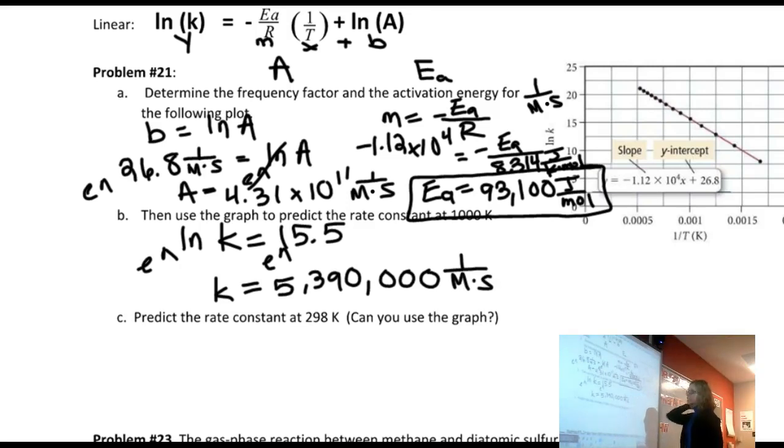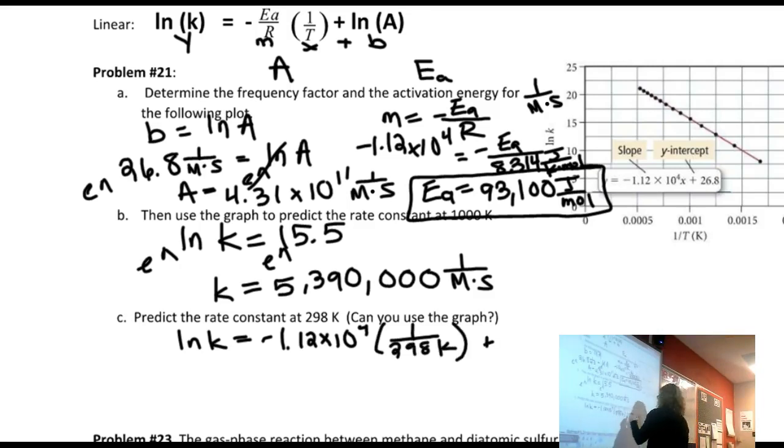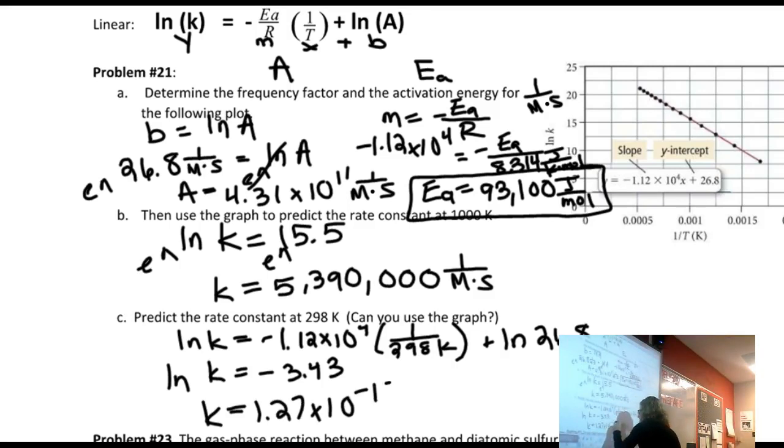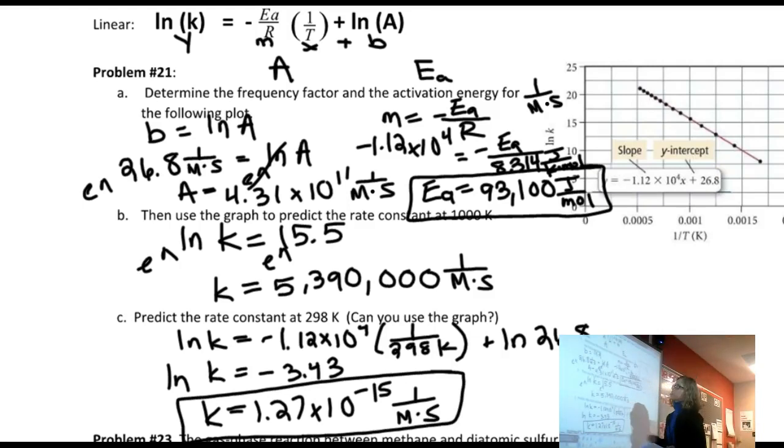Letter C, predict the rate constant at 298 Kelvin. And it says, can you use the diagram this time? Well, no, because it's actually going to be higher than that. 298 Kelvin is pretty tough. It's going to be somewhere in this region. And so I actually have to use the equation of the line, where I'm going to say the natural log of K is equal to negative 1.12 times 10 to the fourth times one over temperature, which is 298 Kelvin, plus the natural log of 26.8. The natural log of K would then be equal to negative 3.43. And you solve that. And then e to both sides, I end up with 1.27 times 10 to the negative 15th, one over molarity times seconds. Much, much smaller rate constant with a lower temperature.